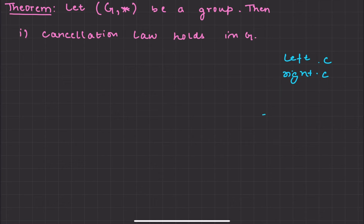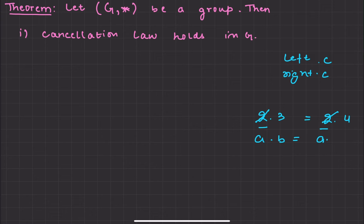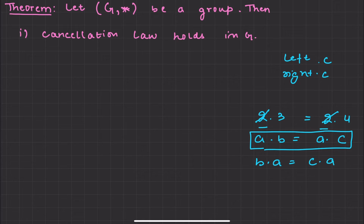What happens in these two? If the left side two elements are equal, then they will cancel out. This is what the theorem will tell. So it will be: a dot b is equal to a dot c. Similarly for right cancellation, b dot a is equal to c dot a — the right side element will cancel out.